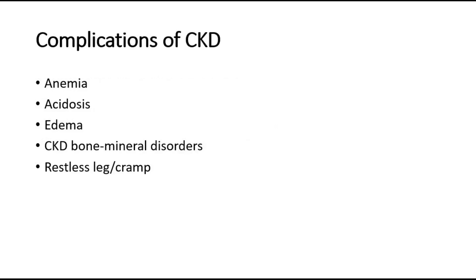The first complication of CKD is anemia. If the eGFR is less than 60, we have to check the hemoglobin to look for anemia. The second complication is acidosis, where the management is to consider giving sodium bicarbonate supplements for patients with eGFR less than 30 and low serum bicarbonate. The third complication is edema, which is very common. For patients with leg edema, we have to restrict fluid and sodium intake, and they may need high doses of loop diuretics like furosemide.